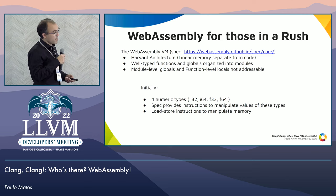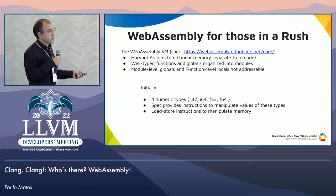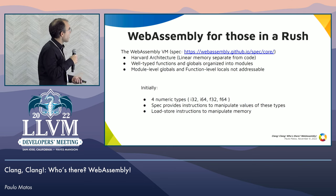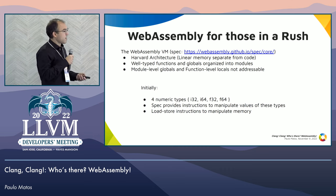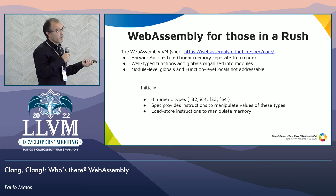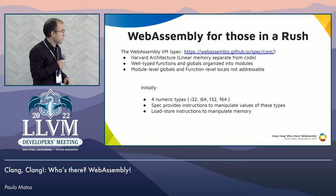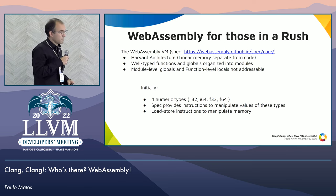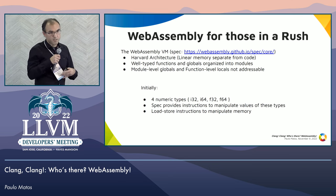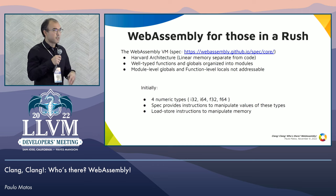WebAssembly is a Harvard architecture. We have well-typed functions arranged in modules. There are some interesting peculiarities where some things you cannot get the address of, like module-level globals and function-level locals. It's also a stack machine, but the stack is implicit, so you cannot actually access the stack. In the beginning it was very simple — it had only four numeric types: two integer types at 32 and 64 bits, and two float types at 32 and 64 bits. We had instructions to manipulate these types and load instructions for the linear memory, which is literally just an array of bytes.